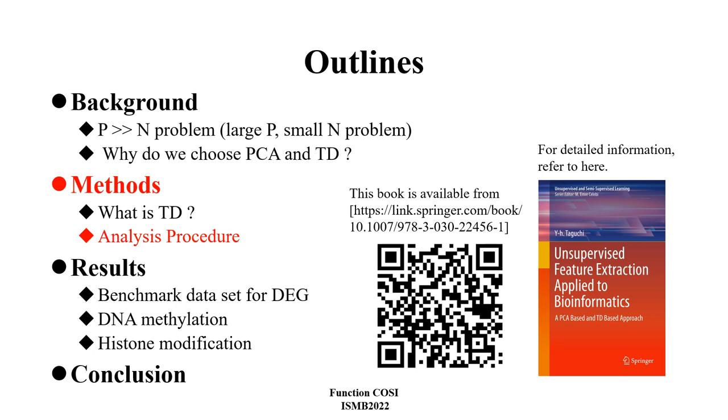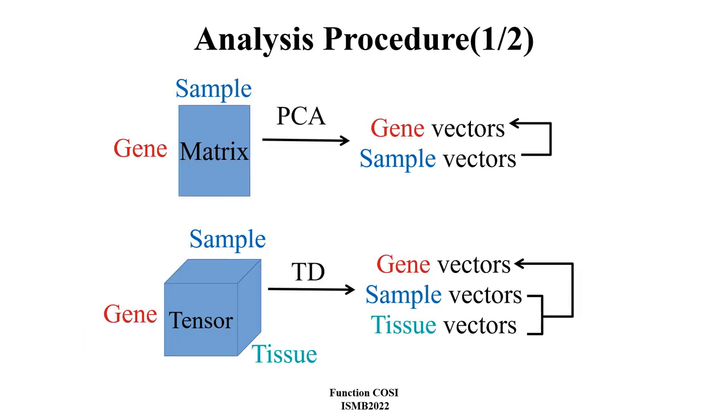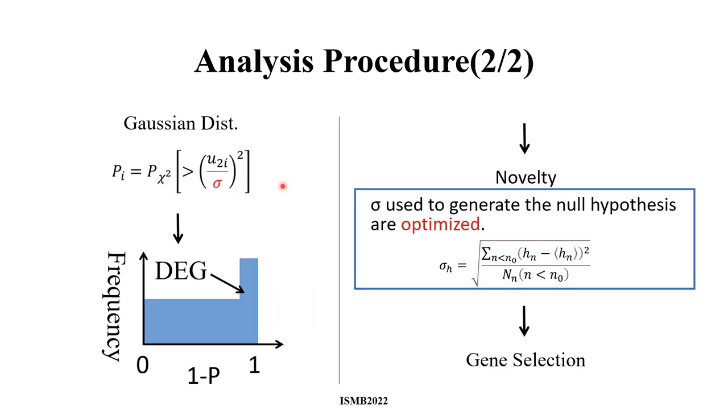Finally, analysis procedure. After principal component analysis and tensor decomposition, we select the sample vector and tissue vector that have the desired properties. The gene vector is then determined. Here, for the selection criteria, we assume that U follows the Gaussian distribution, and we assign a p-value to gene U in the cumulative chi-square distribution. When following Gaussian distribution perfectly, this histogram is flat except around 1-p equals 1.